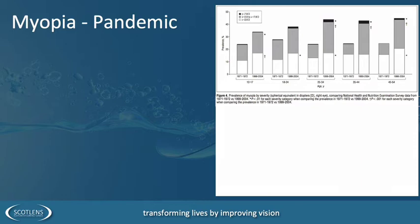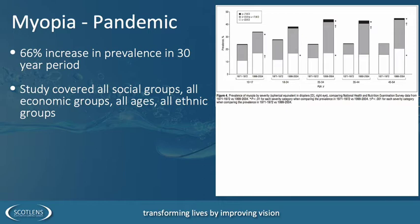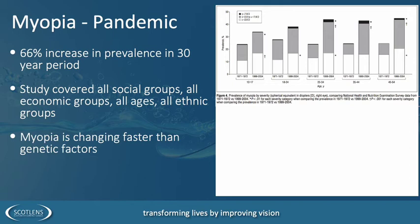We're in the midst of not just a COVID pandemic but a pandemic of myopia, known about for quite a long time. The Susan Vitale study was done in the 1970s over a 30-year period up to the 2000s — this is where the figure of a 66% increase in prevalence of myopia came from. It's a very well-cited study showing across all groups studied on the east coast of America — different socioeconomic groups, both sexes, different ages, and ethnic groups — a general increase in myopia. It shows our eyes are adapting to environmental change, since myopia is changing quicker than genetic factors.